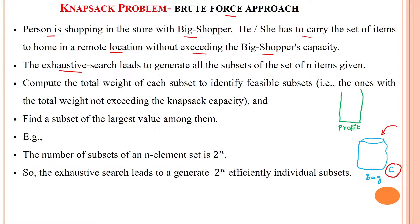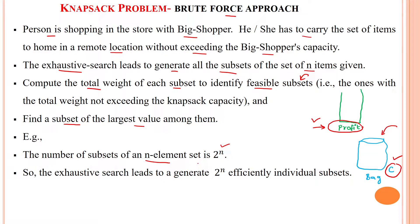The exhaustive search leads to generating all subsets from a given set of n items. We compute the total weight of each subset to identify the feasible solutions, and then find the subset of largest value among them — that means the combination giving the most profit or discount. The number of subsets of an n-element set is 2^n, so the exhaustive search generates 2^n individual subsets.